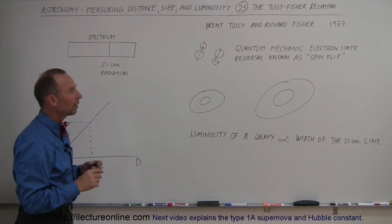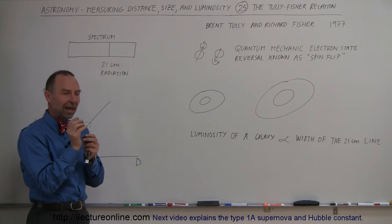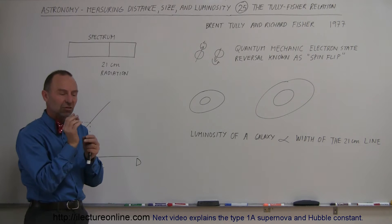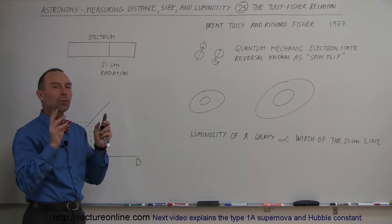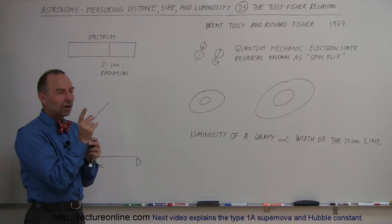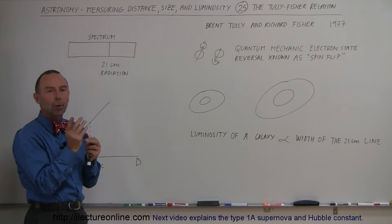What does spin-flip mean? It turns out that electrons have various quantum mechanic states in which they can exist inside the atom. One of those quantum mechanic states is what we call the spin-flip, where an electron can be spin-up or spin-down.